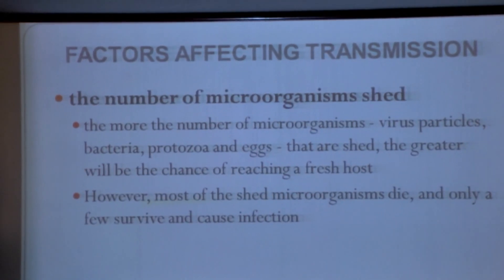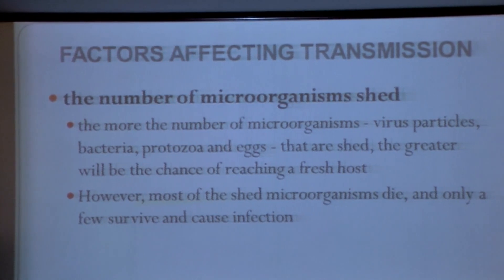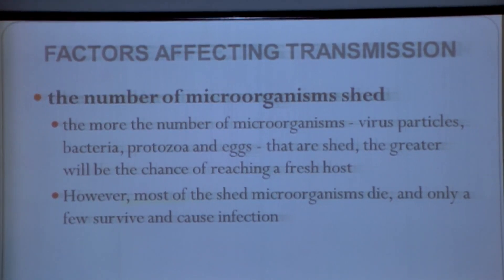The first one is the number of microorganisms shed. The more number of microorganisms released by a host, an infected person, or a carrier, the more the chances of infection will be. However, the number of organisms shed will not always translate to the number of organisms causing infection, because most of the microorganisms released into the environment may be killed by environmental factors.